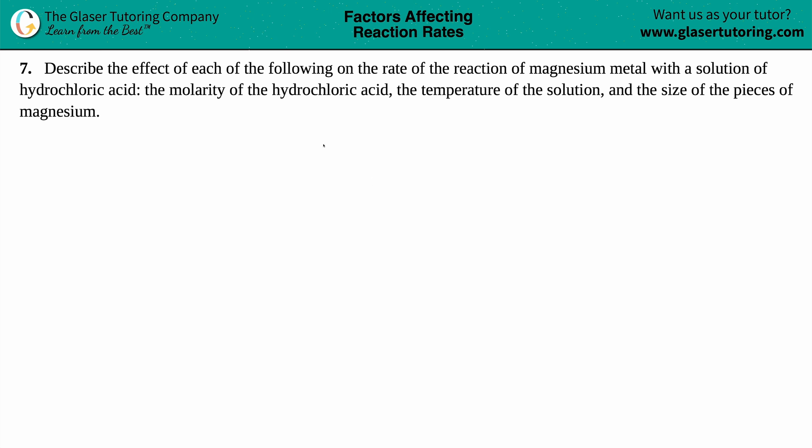Number seven. Describe the effect of each of the following on the rate of the reaction of magnesium metal with a solution of hydrochloric acid. We have the molarity of the hydrochloric acid, the temperature of the solution, and the size of the pieces of the magnesium.